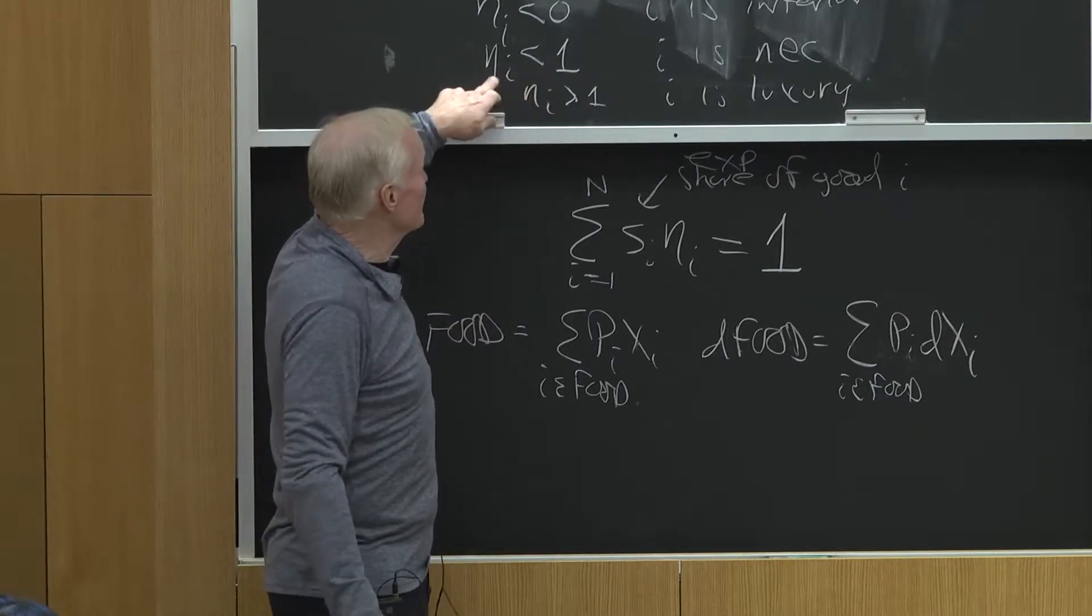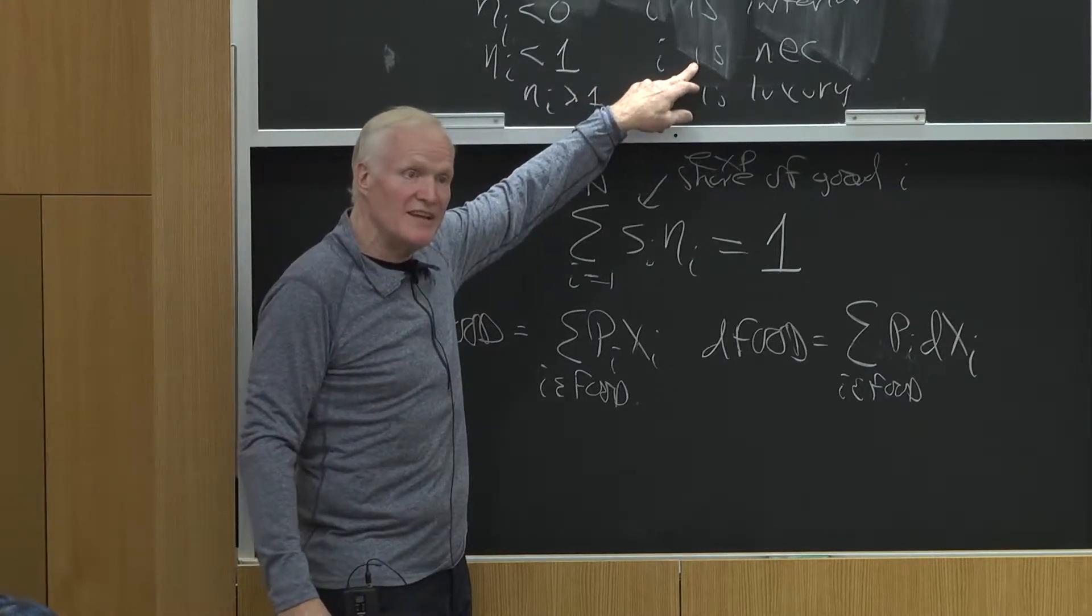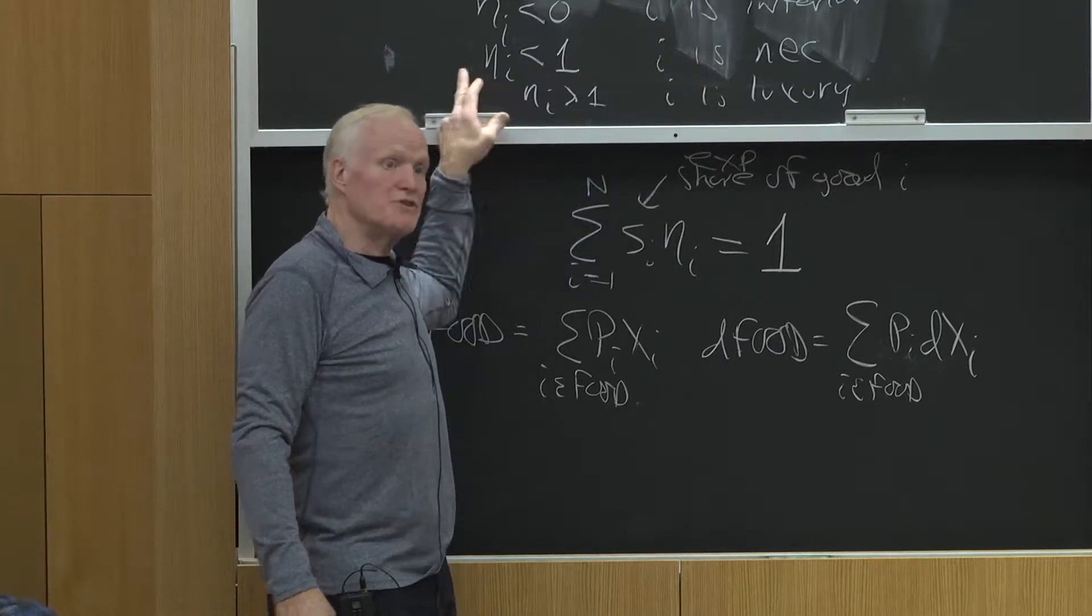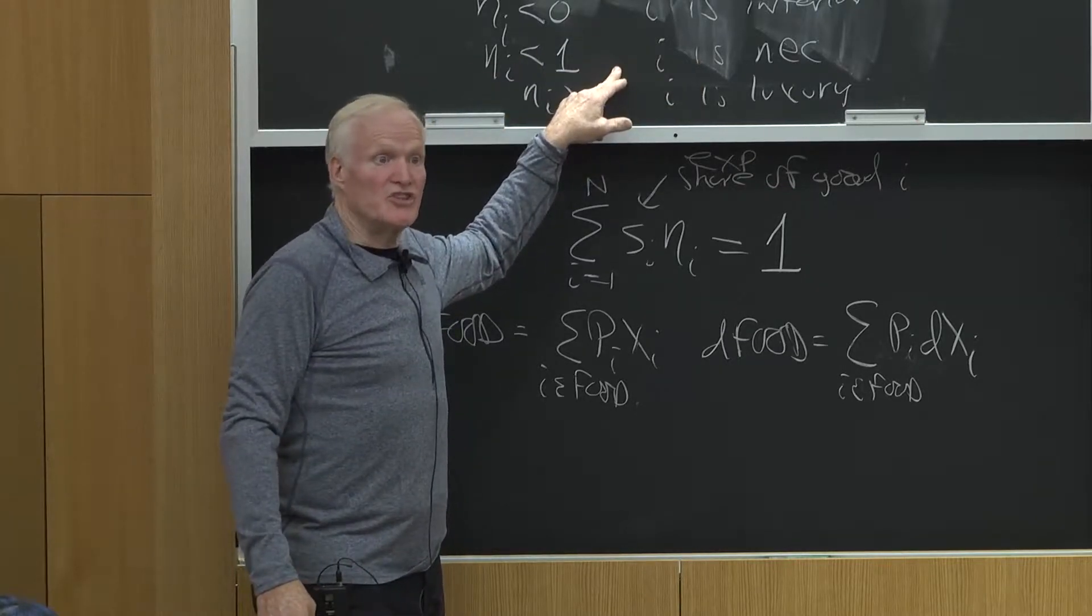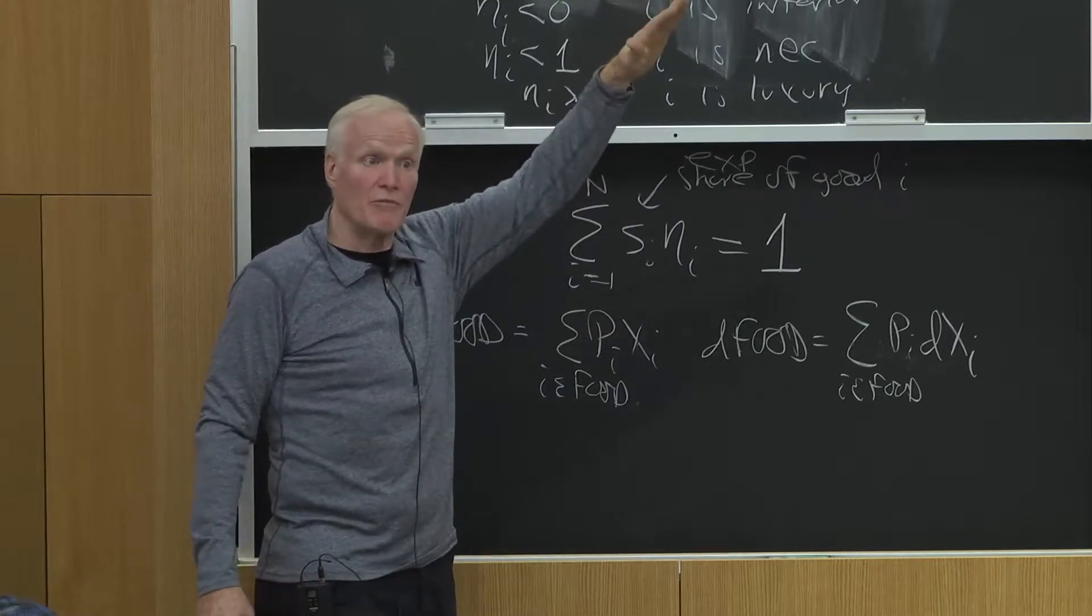So when the income elasticity is less than one, the good is a necessity. The share of income spent on that good is going to fall as income rises.